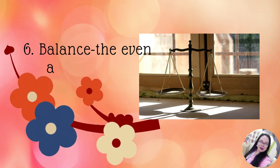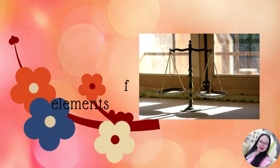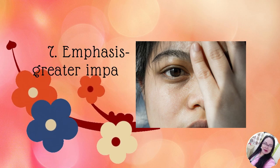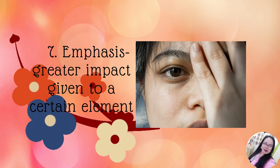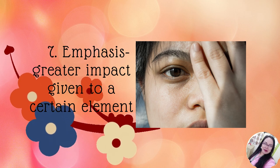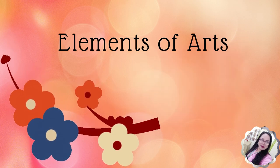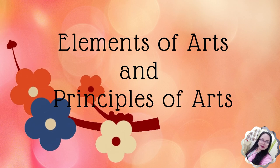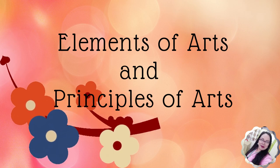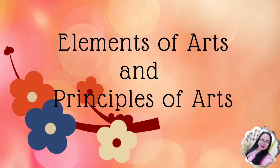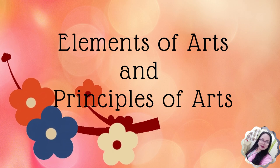Number six is balance. Balance refers to the even and equal distribution of elements. The last principle of art is number seven, emphasis. Emphasis is a principle which may refer to the greater impact given on a certain element. These elements and principles of arts are essential to understand the meaning of a piece of art clearly and deeply. Diverse art forms in the Philippines convey their meanings through the elements and principles present in them.